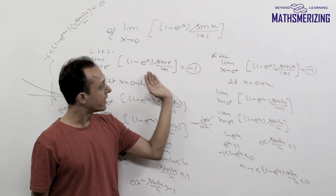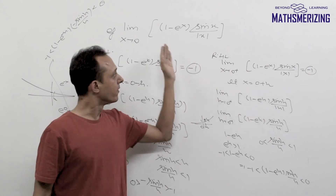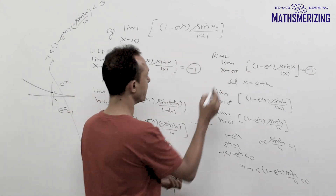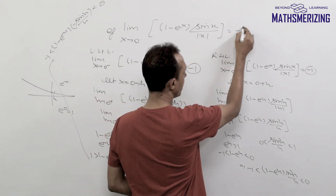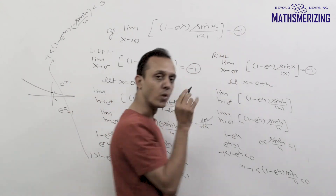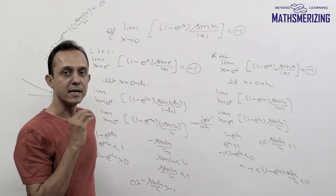Since the left-hand limit and the right-hand limit both exist and are equal, the value of this limit is simply minus 1. So the answer to this question is minus 1.